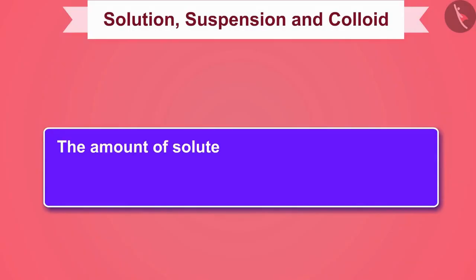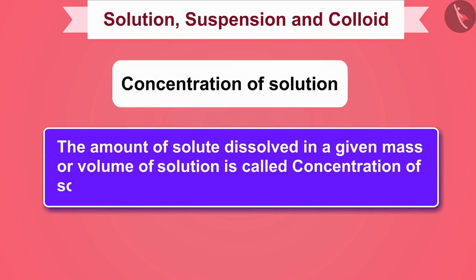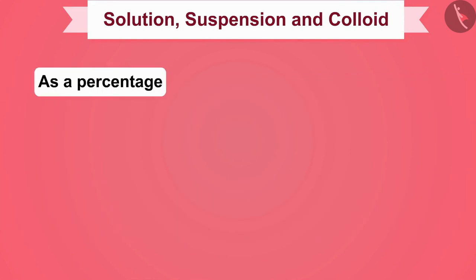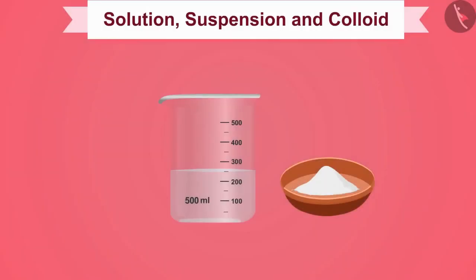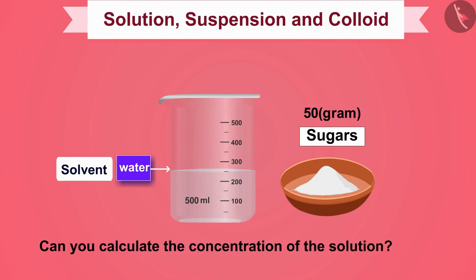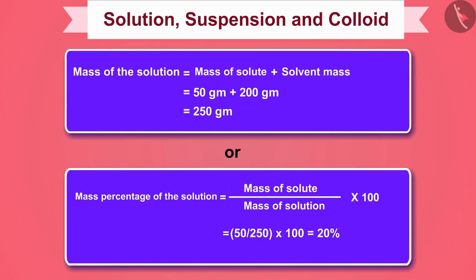The amount of solute dissolved in a given mass or volume of solution is called the concentration of solution. We can also express concentration as a percentage. For example, if 50 grams of sugar is dissolved in 200 grams of water, can you calculate the concentration of the solution? Pause the video, think about the answer, and then match your answer.